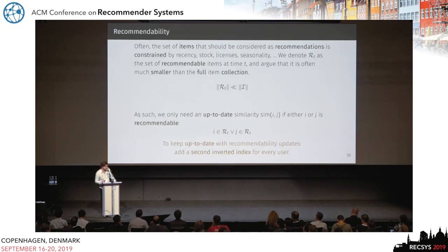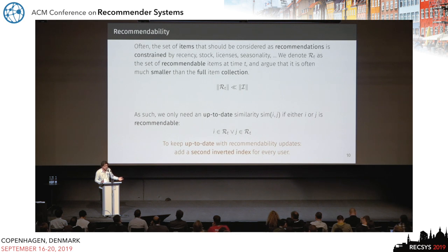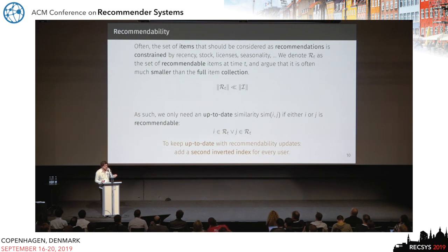As a final observation, we don't really need to compute all item similarities. It's going to happen pretty often that there's a set of items you're not going to recommend to anyone. Think about news, where you might not want to show something that happened two years ago, or seasonality, or stock — there are many such examples. When you have a smaller set of recommendable items, you don't need the similarity if two pairs of items are not in that set, and we're going to be exploring that as well.